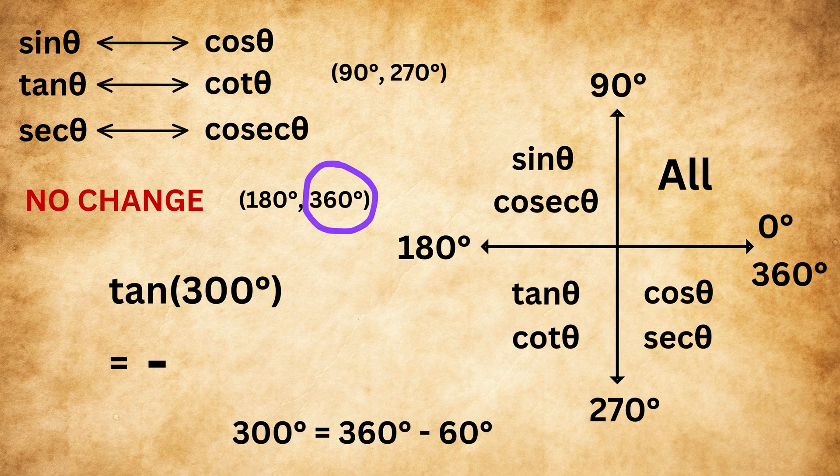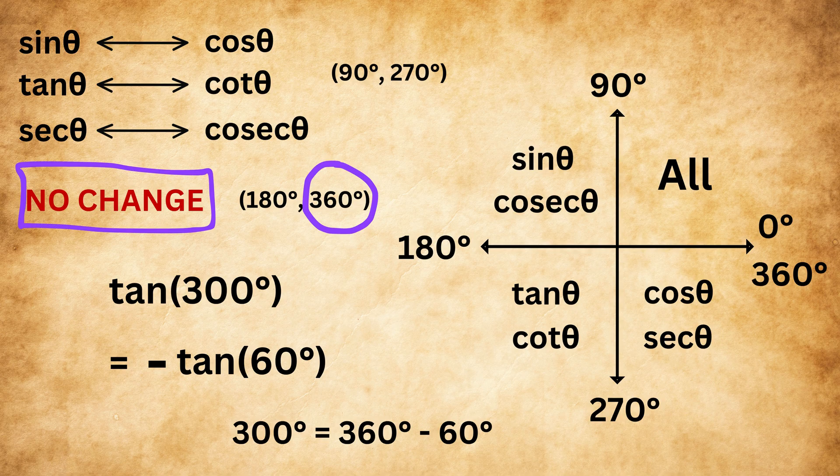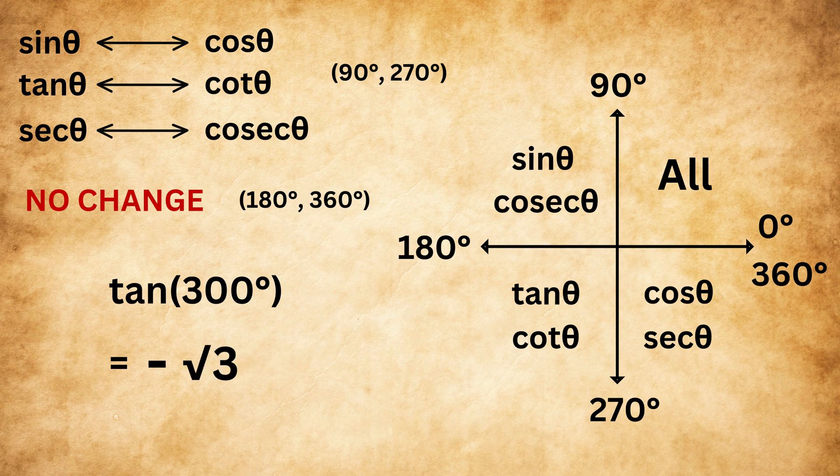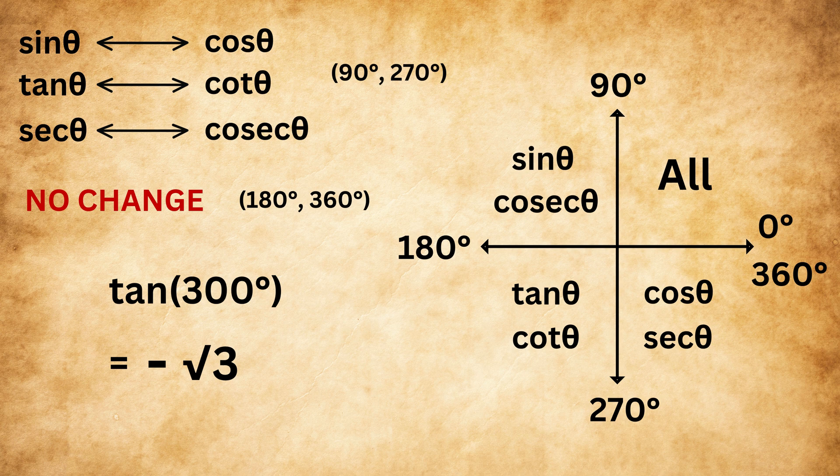Next, we see that 300 is 60 degrees less than 360, so we'll write it as tan 60. Since the angle is not near 90 or 270, there will be no change in the ratio. Tan 60 is root 3, so tan 300 becomes minus square root of 3.